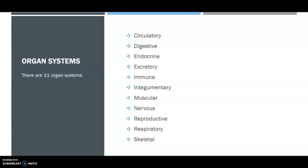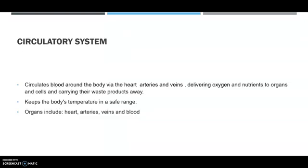The circulatory system circulates blood around the body through the heart, arteries, and veins, delivering oxygen and nutrients to the organs and cells, and carrying waste products away. It also keeps the body temperature in a safe range and maintains homeostasis. The organs include the heart, arteries, veins, and blood.